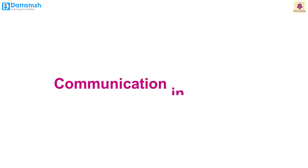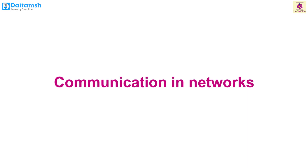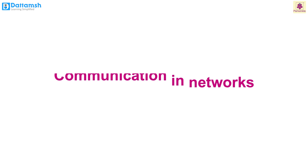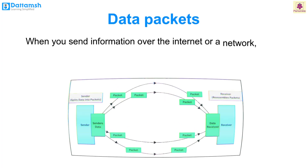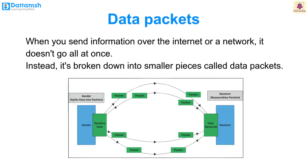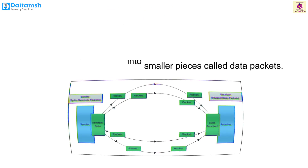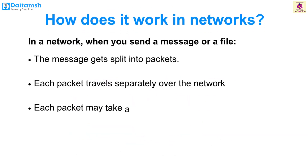Now let's learn about communication in networks. To understand communication in networks, let's break it down into two simple parts: data packets and IP addresses. When you send information over the internet or a network, it doesn't go all at once — instead it breaks down into smaller pieces called data packets.